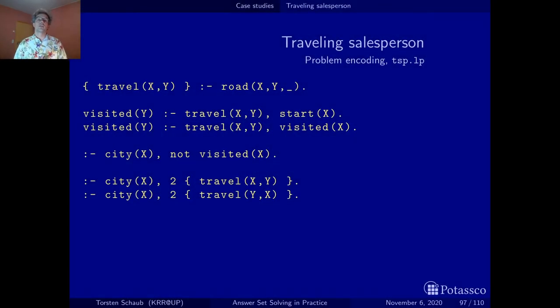Our encoding is not only nicely uniform in separating problem instances like the one we've seen before from the actual problem encoding that we're looking at right now. But it also nicely reflects the generate and test methodology of ASP. So here the first rule is the generator and all remaining rules constitute the tester that analyze the solution candidate obtained here and check whether it represents a valid solution to our problem.